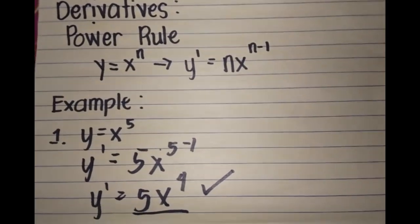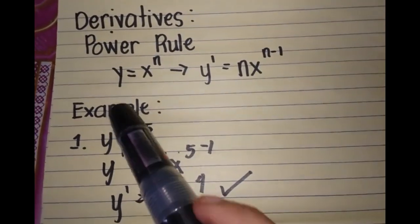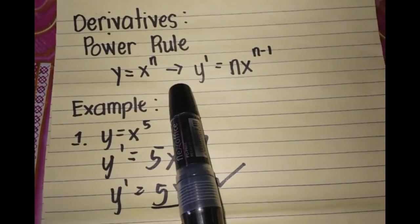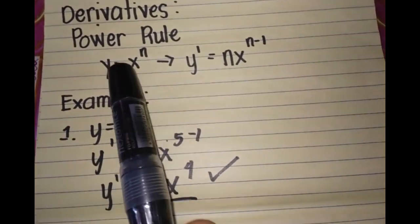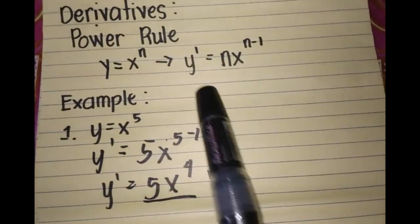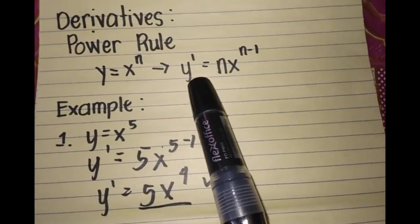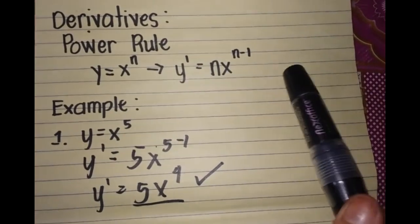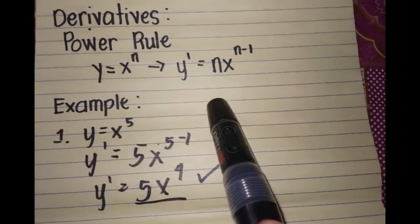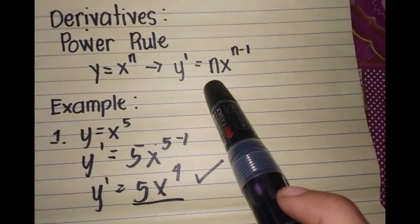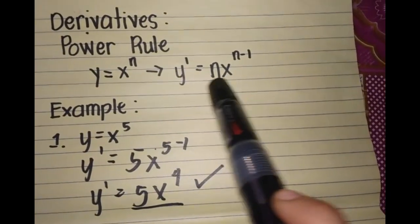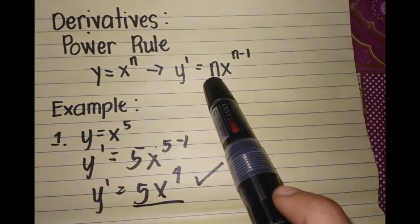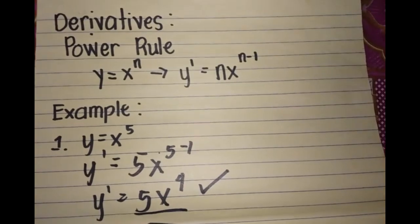In the power rule, we have y equals x raised to n. How can we derive this equation? Using the power rule, we derive it as y prime equals n times x raised to n minus 1. Since n is our exponent, we write it at the side of our variable.